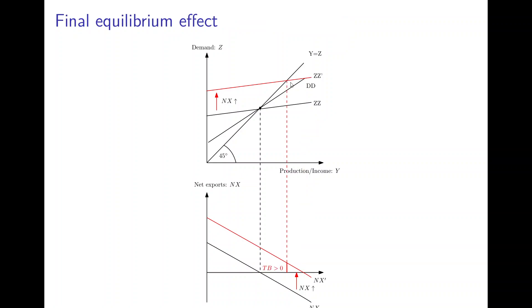So here would be the new equilibrium in the goods market after the depreciation. The new equilibrium is where the ZZ' line intersects with the 45-degree line, and we see that this is associated with a positive trade balance — so we have a trade surplus in this situation.